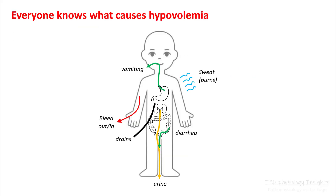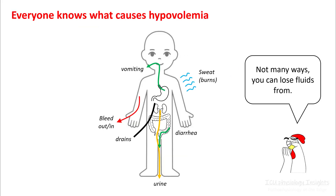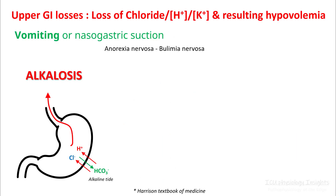There are only a few ways you can lose fluid from your system, including vomiting, diarrhea, through urine, sweating, and burns. You can also lose volume by bleeding or from excessive drainage of secretions. Upper GI losses result in loss of chloride, hydrogen ions, and potassium, and result in hypovolemia. Patients with vomiting or nasogastric suction would develop alkalosis.